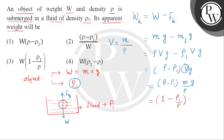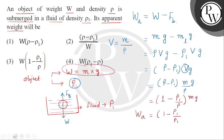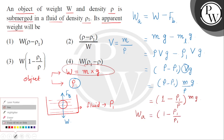Now it is multiplied by Mg. अब Mg means क्या है? W. So we get the apparent weight as (1 minus rho 1 divided by rho), and this is taken in the bracket, multiplied by W.